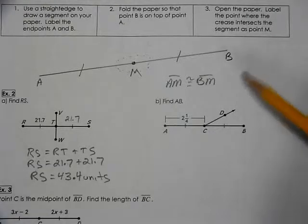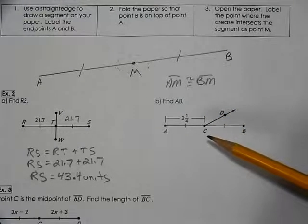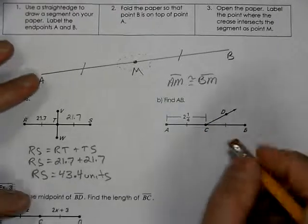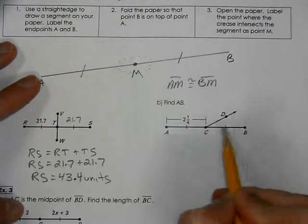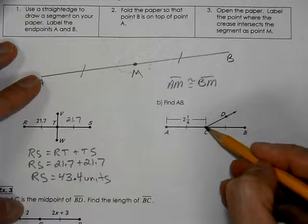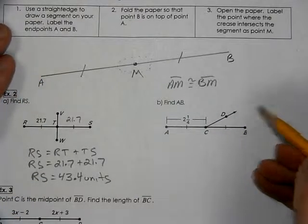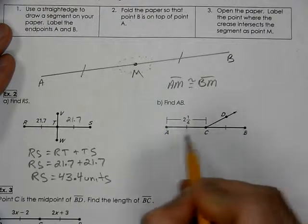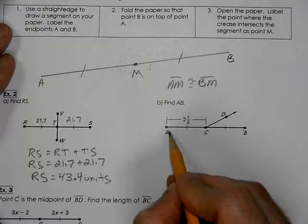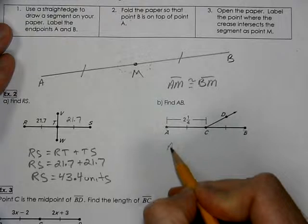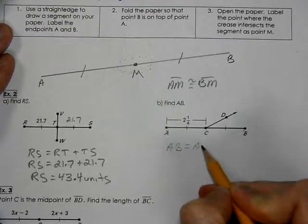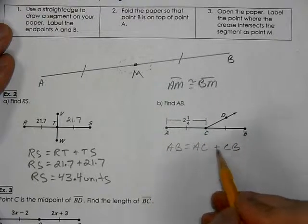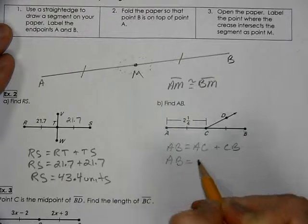We're looking at a segment bisector. It's a ray bisecting this segment—a ray because it has an endpoint going in one direction with an arrow. We're trying to find the length of AB. I know that AB is made up of these two smaller pieces called AC and CB.